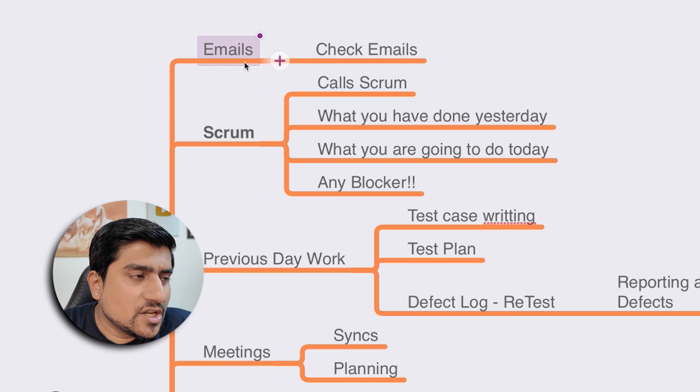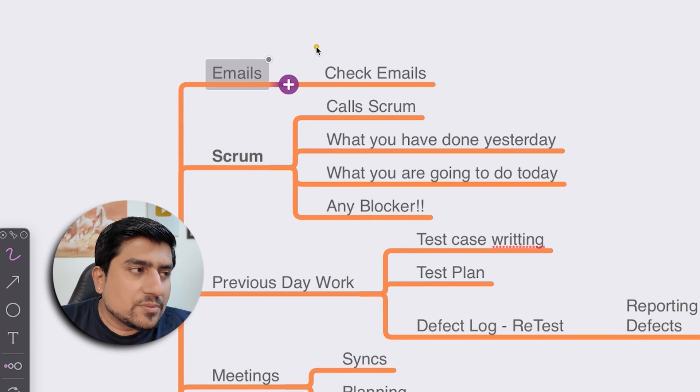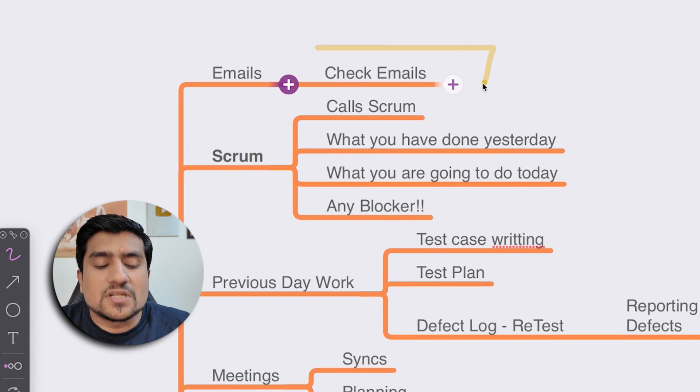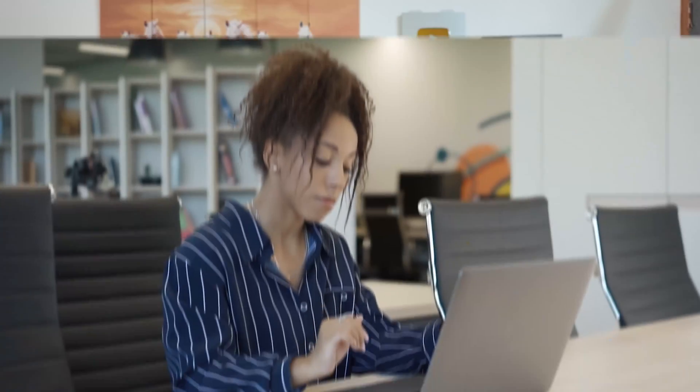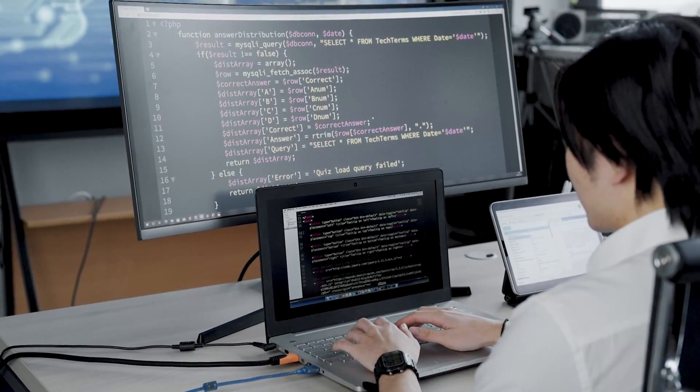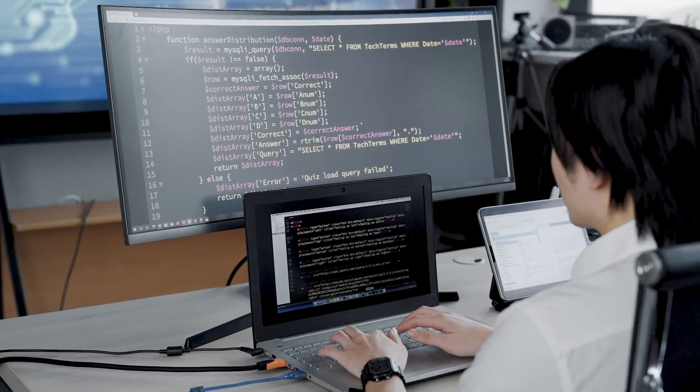First, you can mention that you basically check emails — what exactly is in the emails. For example, if there is any bug which you reported and which the developer has already fixed, that you have checked. Also, if there is a major announcement or project-related update, you can mention that.